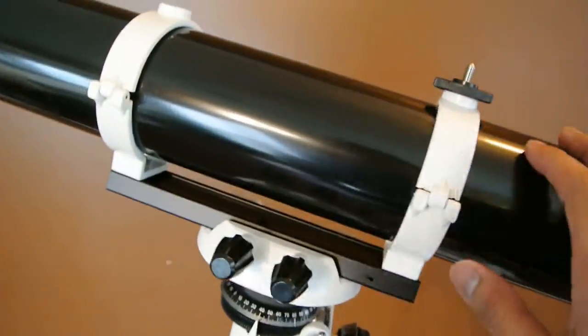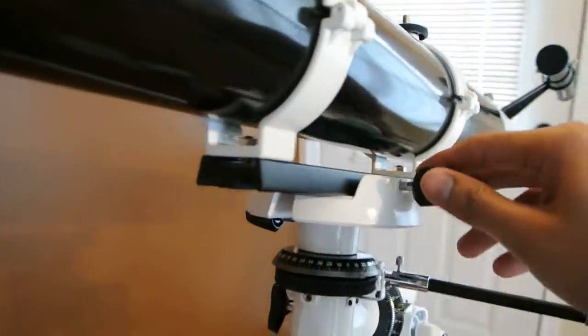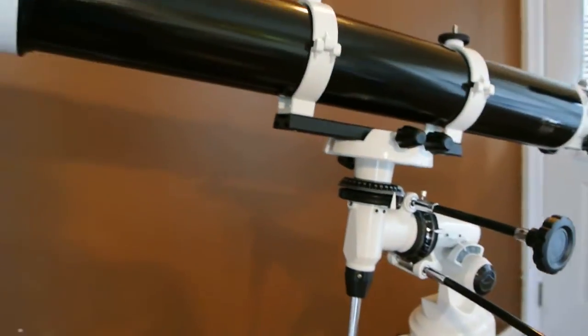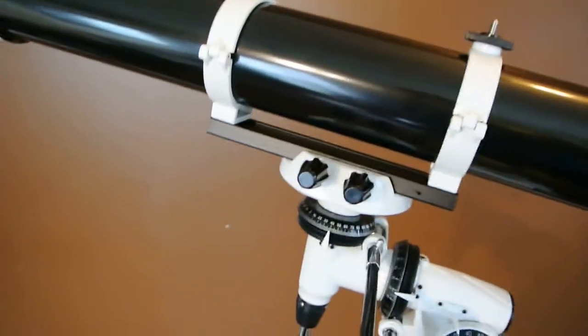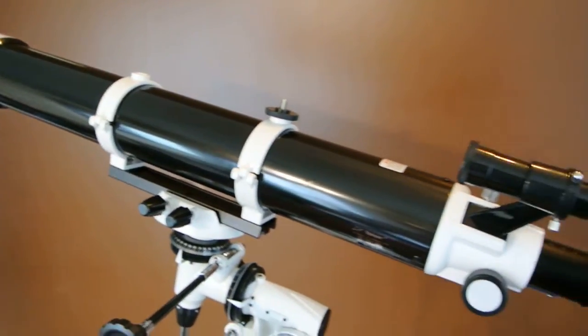The actual telescope you can remove fairly easily if you're going to store it. You just take these two wing nuts off or loosen them and this slides right off so you get fairly easy storage. I would recommend keeping the box that the telescope came in so you can put it back in if you're going to store it.